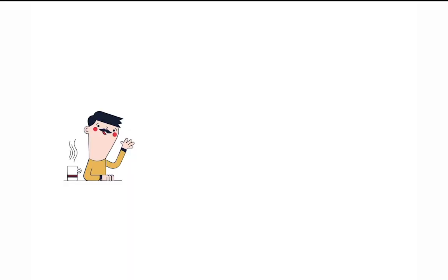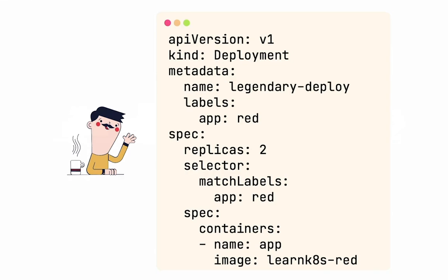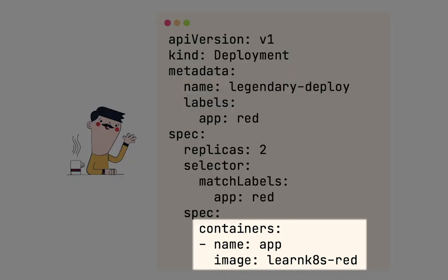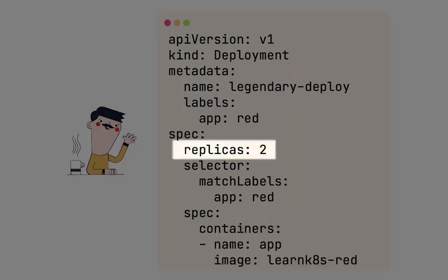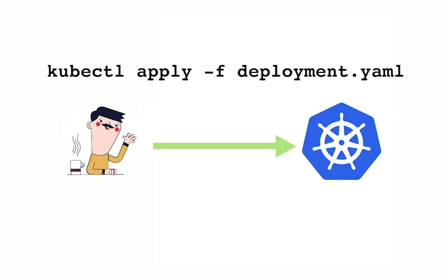Let's say we have a user with coffee within reach. We write a deployment file — a recipe for an application we're trying to deploy to our cluster. It defines what container image we want to deploy and how many replicas we'd like to run. So we send the request to the Kubernetes API by running kubectl apply -f deployment.yaml.